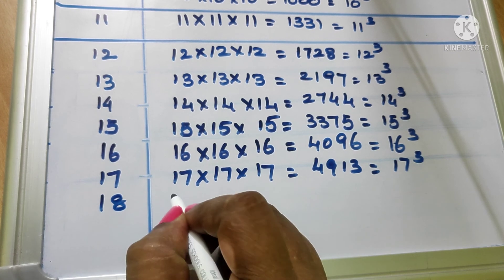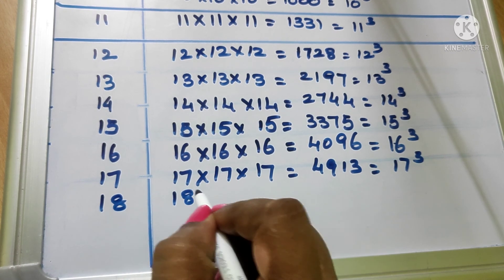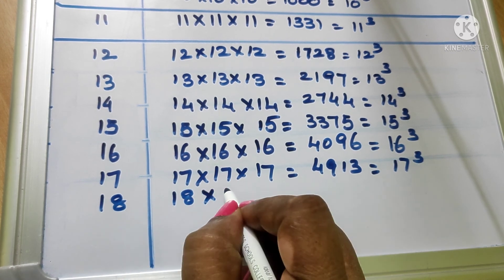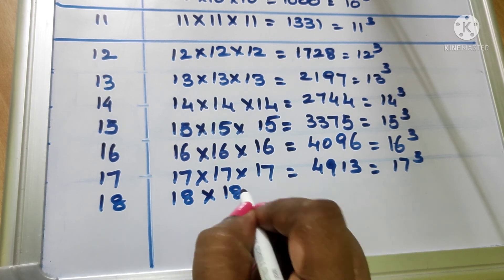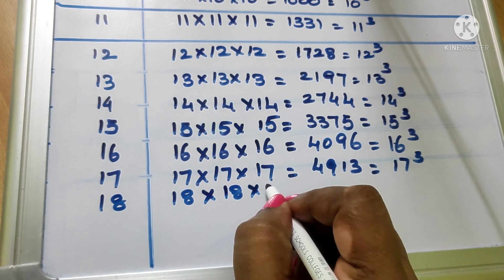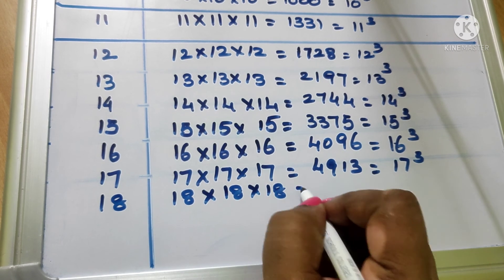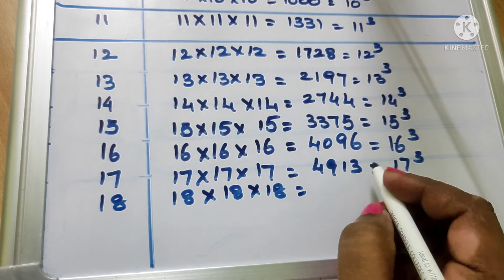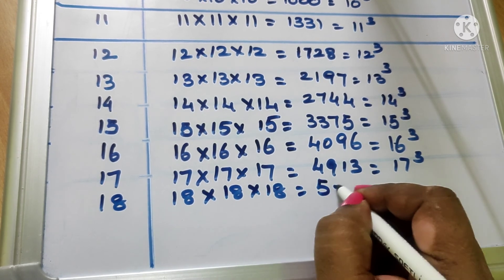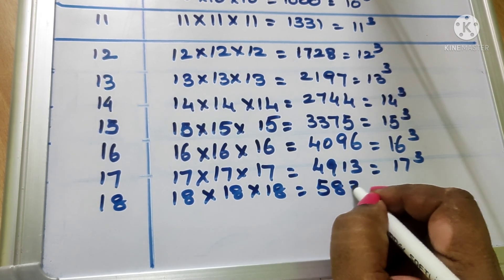18 into 18 into 18 equal to 5832. We write as 18 cube.